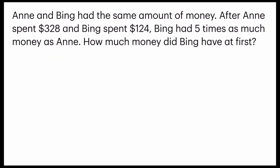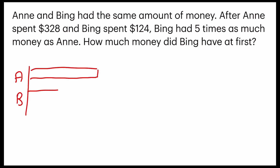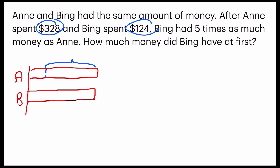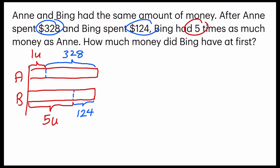The last question has the same concept. Anne and Bing had the same amount of money. You should try drawing the model on your own and then play the video to compare with mine and see if you got the model drawing correct. They had the same amount of money and Anne spent more than Bing, so I'm going to cut off here for Anne, which is $328, and Bing is here, which is $124. After that, I'm going to indicate Bing had 5 units, which means Anne would have 1 unit.